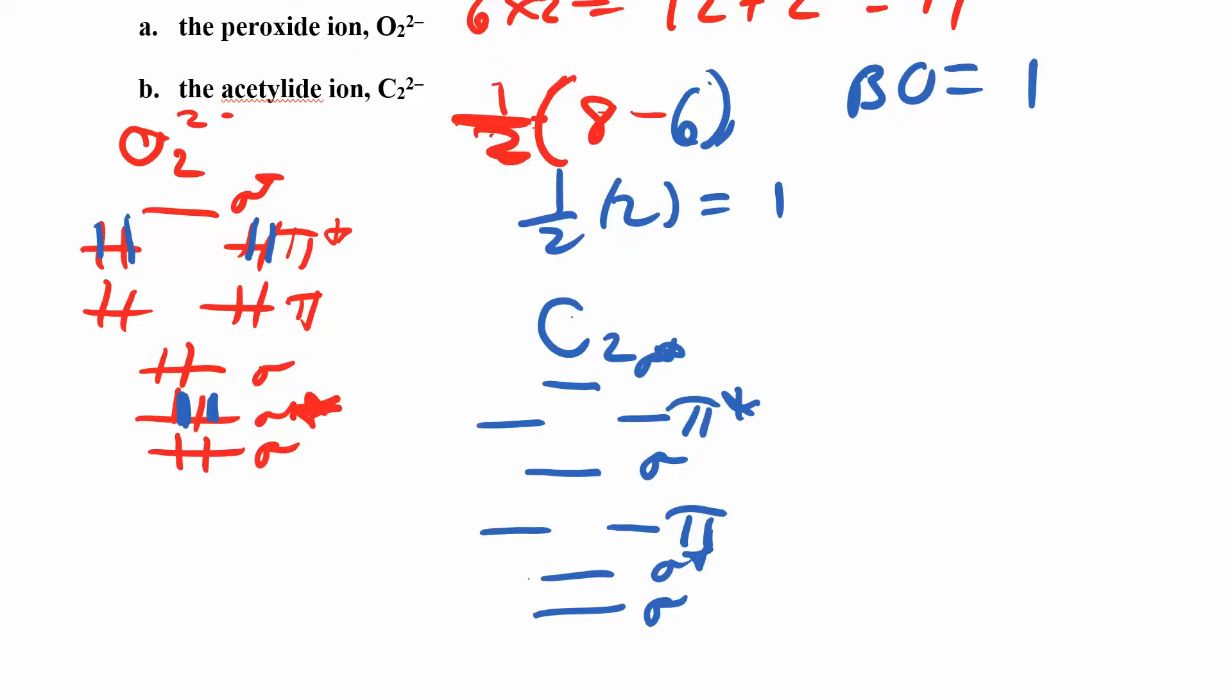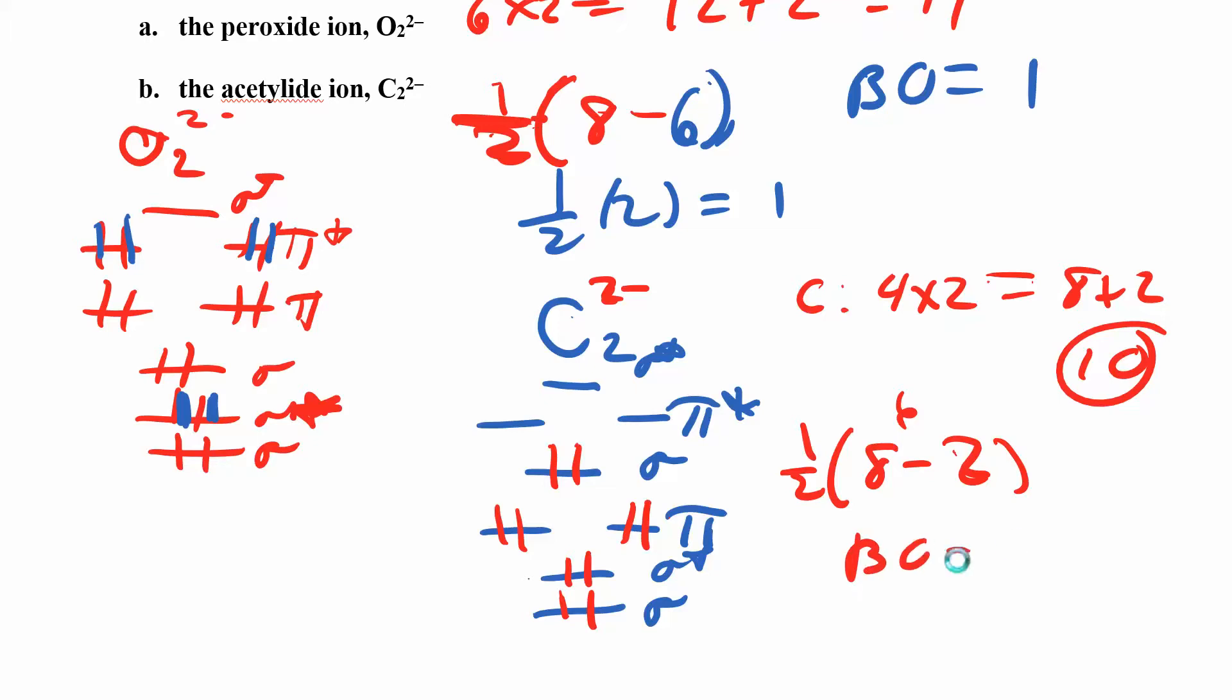Now putting in electrons for C2 2 minus: carbon has 4 valence electrons, times 2 gives 8, and the 2 minus means I have 2 more, so I have 10 electrons. I have 1, 2, 3, 4, 5, 6, 7, 8, 9, 10. I just put two more electrons into a bonding orbital, so the bond order probably increased. Let's see: one half of—I have 2, 4, 6, 8 in bonding minus 2 in starred orbitals. Eight minus 2 is 6, so my bond order here is 3.